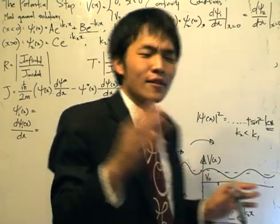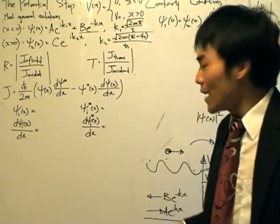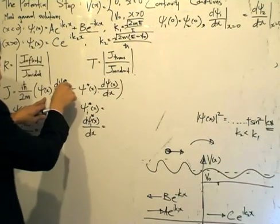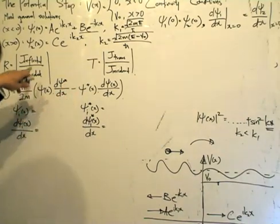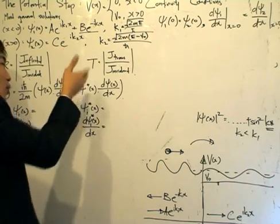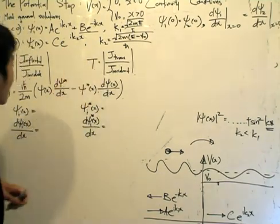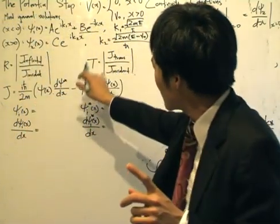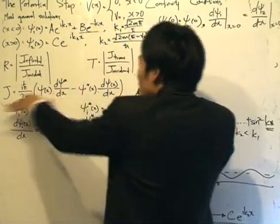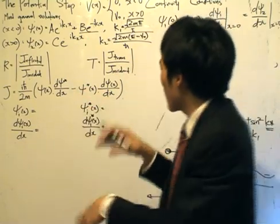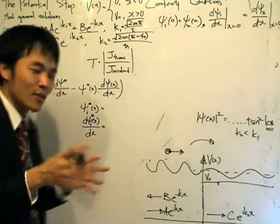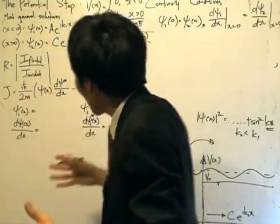From conservation of probability, the probability current density J is defined as i times h-bar divided by 2m, multiplied by the wave function psi times the first derivative of psi conjugate with respect to x, minus the conjugate of the wave function multiplied by the x derivative of psi itself. It looks a bit like the product rule but not quite, because we're taking conjugates and there's a minus sign. We can predict the result will be real, since we're multiplying psi by psi conjugate — though let's just see what we get.